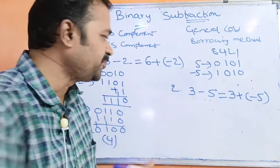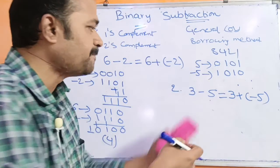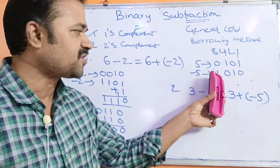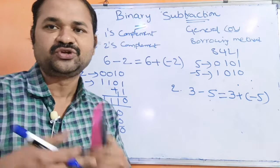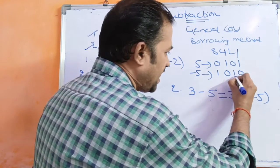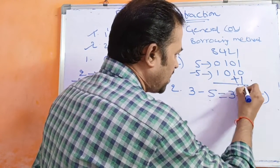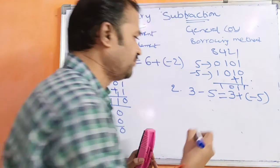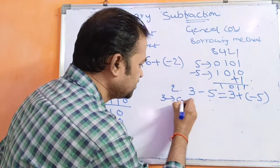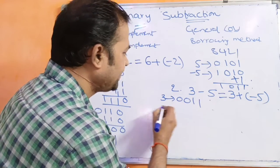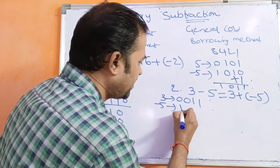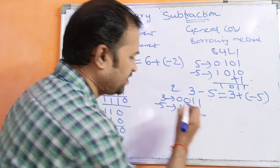Now let us see the second example using two's complement. First represent minus 5. The one's complement of 5 (0, 1, 0, 1) is 1, 0, 1, 0. Two's complement means add 1, giving 1, 0, 1, 1. So what is 3 in binary notation? 0, 0, 1, 1. And minus 5 in two's complement is 1, 0, 1, 1.